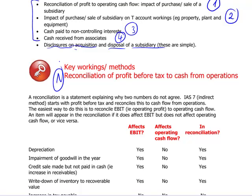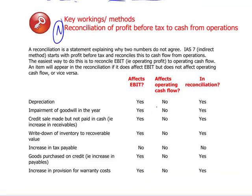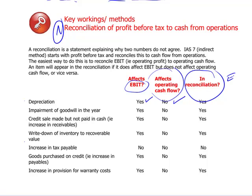The first case is Reconciliation of Profit Before Tax to Cash From Operations. There are a set of adjustments. Look at EBIT — Earnings Before Interest and Tax — and Operating Cash Flows. If an element is present in one but not the other, it will be an adjustment in the reconciliation. For instance, depreciation is included in Earnings Before Tax, but depreciation is not a cash flow item. So if you start from EBIT, depreciation was taken out; now you're adding it back. That's the first adjustment.